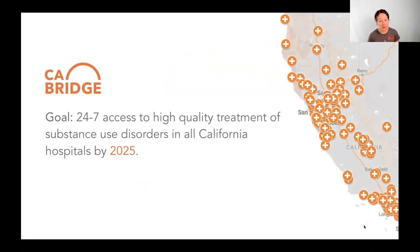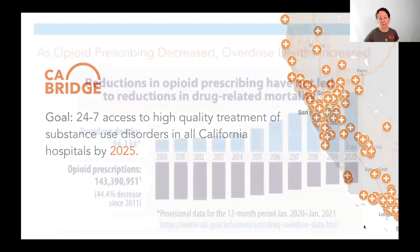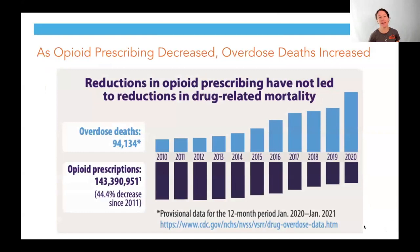Here at California Bridge, we have one goal: to make evidence-based treatment for addiction available and easily accessible at every hospital in California by 2025. I'm proud to say that we are at over 280 of the 300-and-change hospitals. We are so close to meeting this goal, and we are really excited to have all of you here to hopefully help increase that.